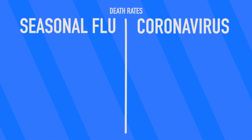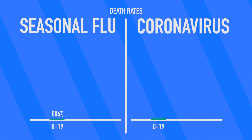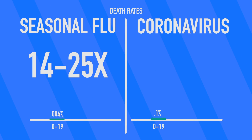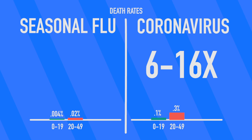So, how deadly is COVID-19? Looking at the data, we can easily compare the death rates of COVID-19 to the common flu. Breaking down the data by age group, ages 0 to 19 have a death rate of 0.004% with the flu, whereas COVID-19 has seen a death rate of 0.1% for the same age group — roughly 14 to 25 times higher than the seasonal flu. However, the 0 to 19 age group is the least at risk. Looking at people ages 20 to 49, the seasonal flu has a death rate of 0.02%, whereas COVID-19 has a death rate of 0.3%, which is 6 to 16 times higher than the seasonal flu.